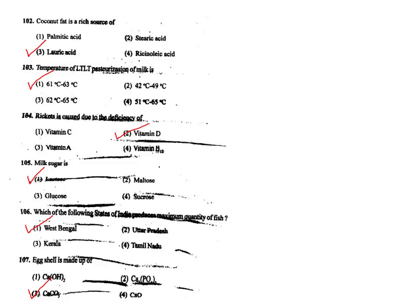Q102. Coconut fat is a rich source of — coconut fat contains the most lauric acid. The correct answer is option 3.